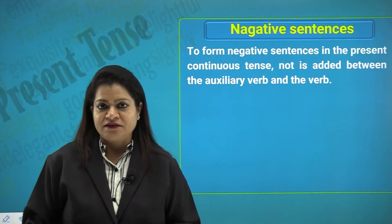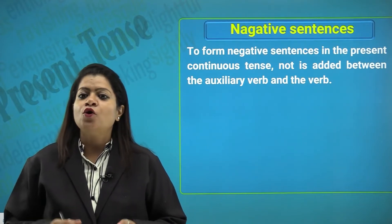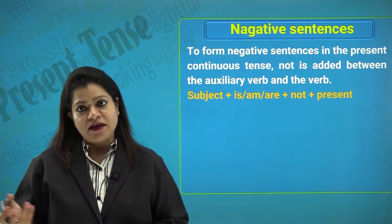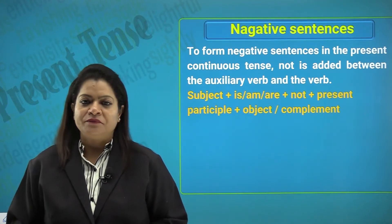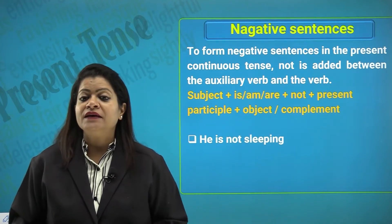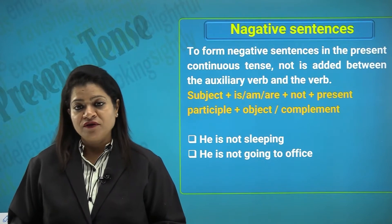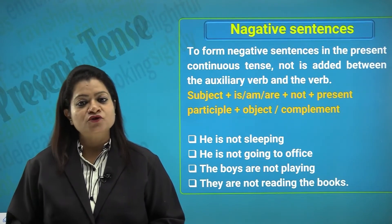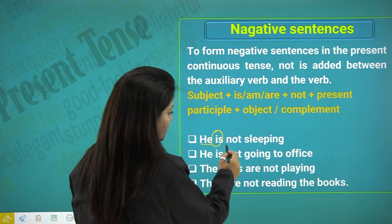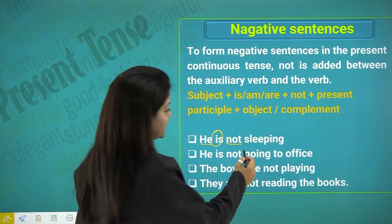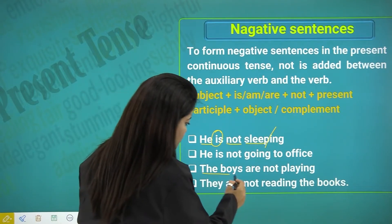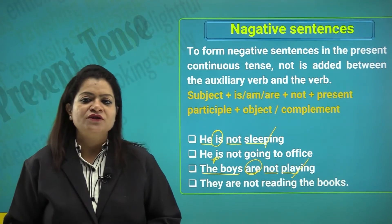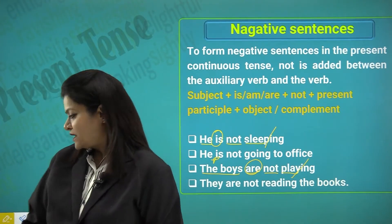To form negative sentences in the present continuous tense, 'not' is added between the auxiliary verb and the verb. The structure is: subject + is/am/are + not + present participle + object or complement. Examples: 'He is not sleeping,' 'He is not going to office,' 'The boys are not playing,' 'He is not reading the books.' Notice how with the plural subject 'the boys,' the auxiliary 'are' is used, followed by 'not' and then the verb+ing form.